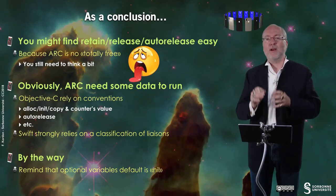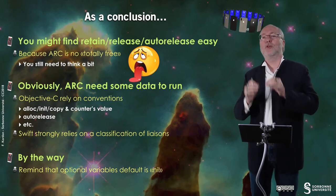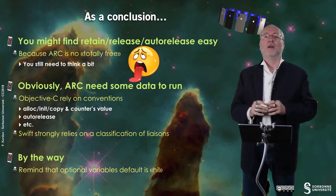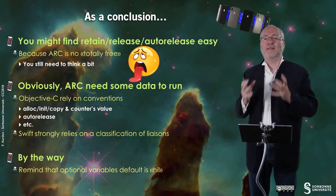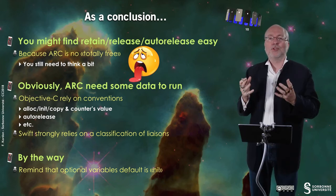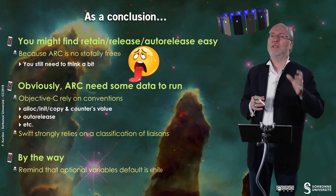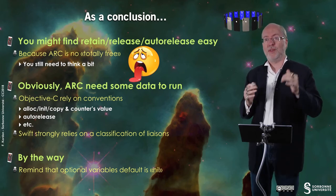In Objective-C, everything relied on convention — for example, if your function contains 'alloc', 'init', or 'copy', the reference counter's value is one, and there is the notion of autorelease. There are no such conventions in Swift, which is nice because if you don't respect conventions in Objective-C you have big memory troubles. Swift, with the classification of liaisons — strong and weak were introduced with ARC — allows this mechanism to work in the best way.